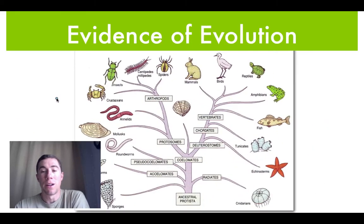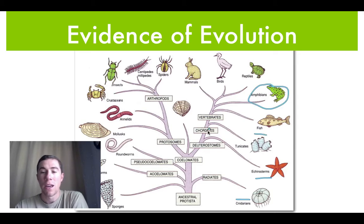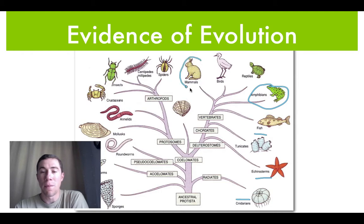Today we'll be talking about evidence of evolution, which will conclude this section on evolution. What I've put up here is a basic cartoonish evolutionary tree. At the end of each branch we have quite a few different organisms — from cnidarians, which are jellies, to echinoderms, fish, and amphibians. These evolutionary trees show how organisms are related; for example, mammals are much more closely related to birds than to spiders.